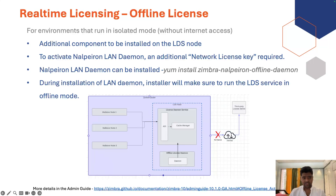Offline licensing is a special case for customers running their system in a completely dark network without any internet access. For that, you need to install an additional component called the nelperon offline daemon. You can run the command `apt install zimbra-nelperon-offline-daemon`, making sure you install this component on the same node where your LDS is running. You also need a network license key. The installer will update the configuration in the LDS service to make it compatible with offline mode. Make sure you have a network key before installing — contact support and sales.